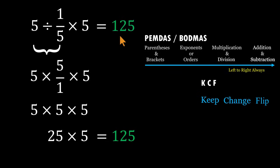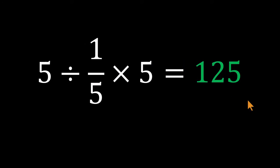That's the correct answer: 125, not 5. This is why these problems are so deceptive. The math isn't hard, but the order matters. Ignore it, and even simple numbers will trick you. If that made sense, like the video and share it with a friend who enjoys these tiny brain teasers. Subscribe to Beyond Numbers for more fun math challenges.